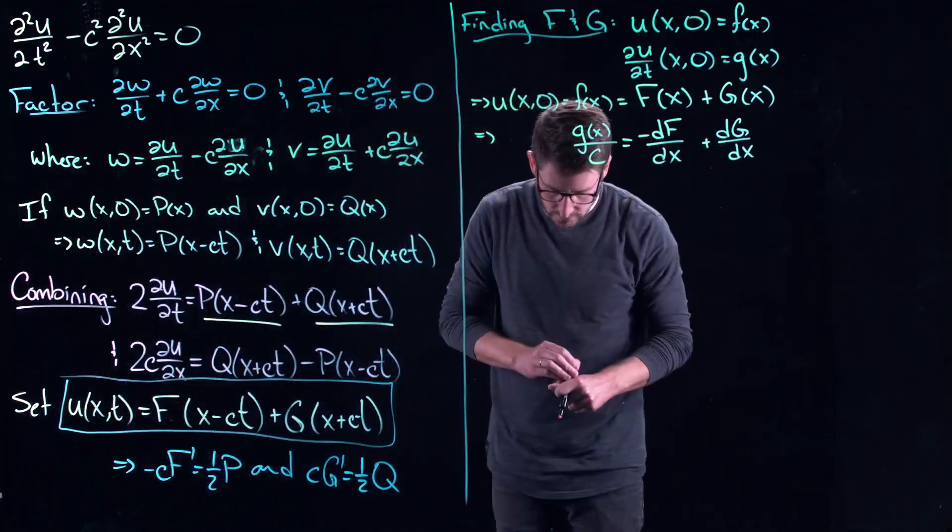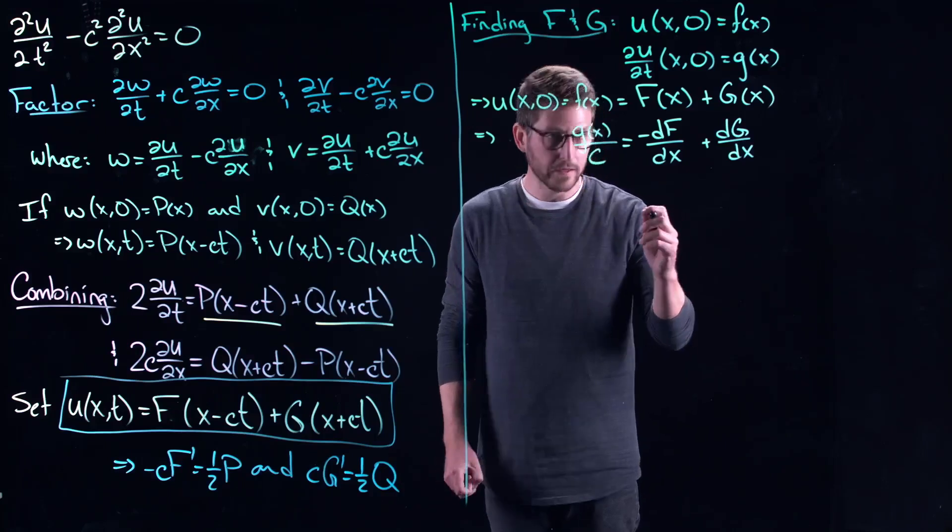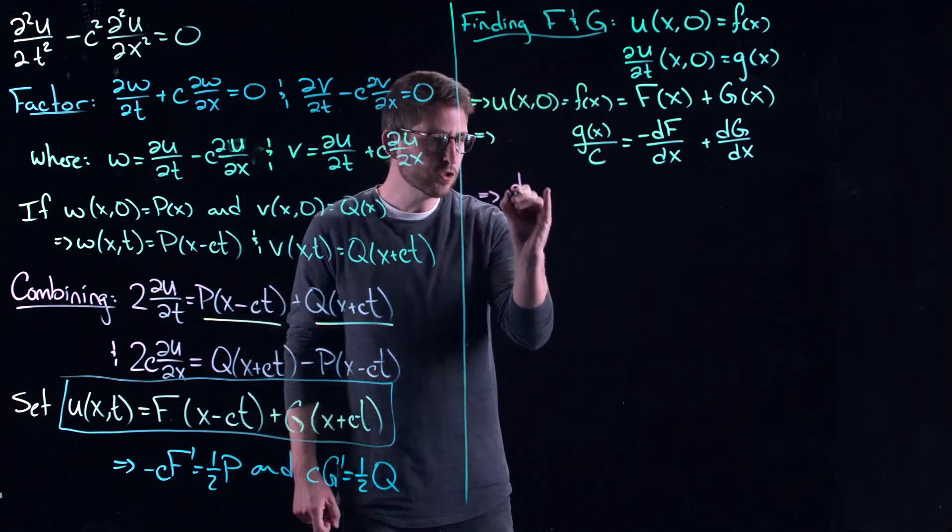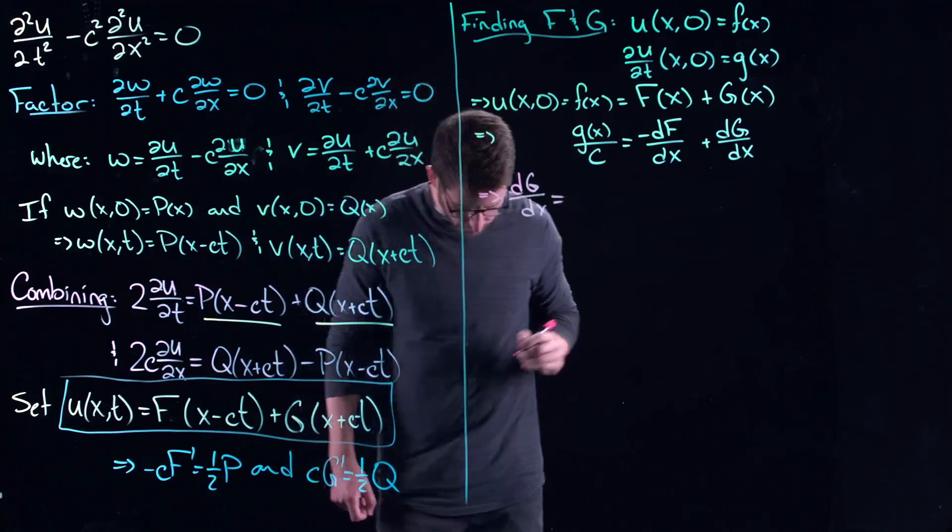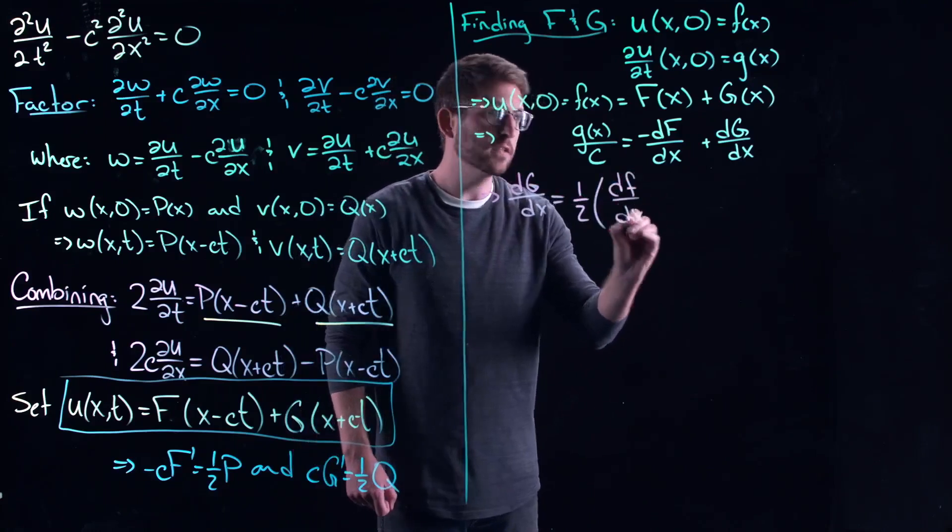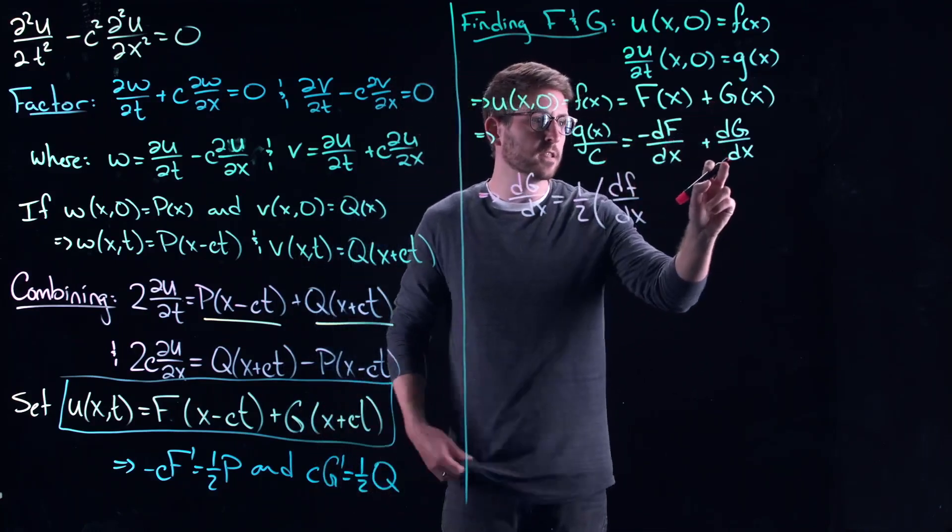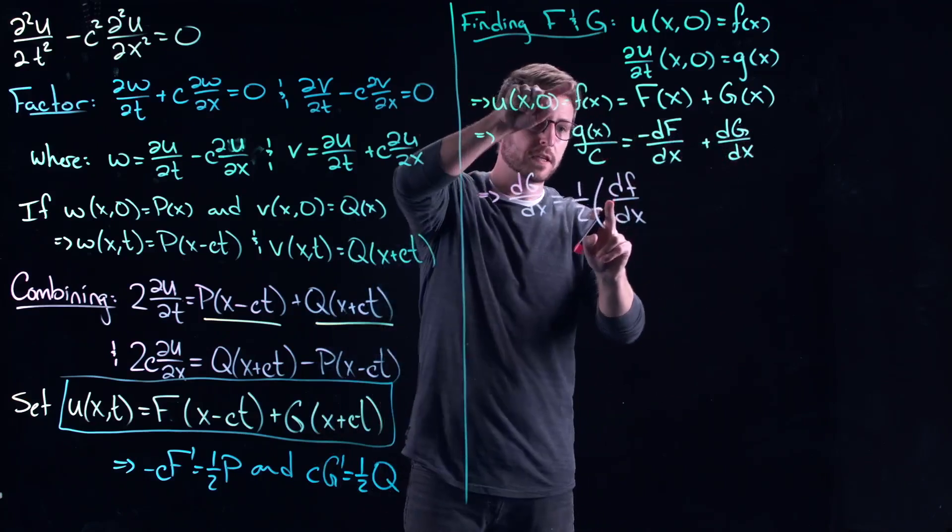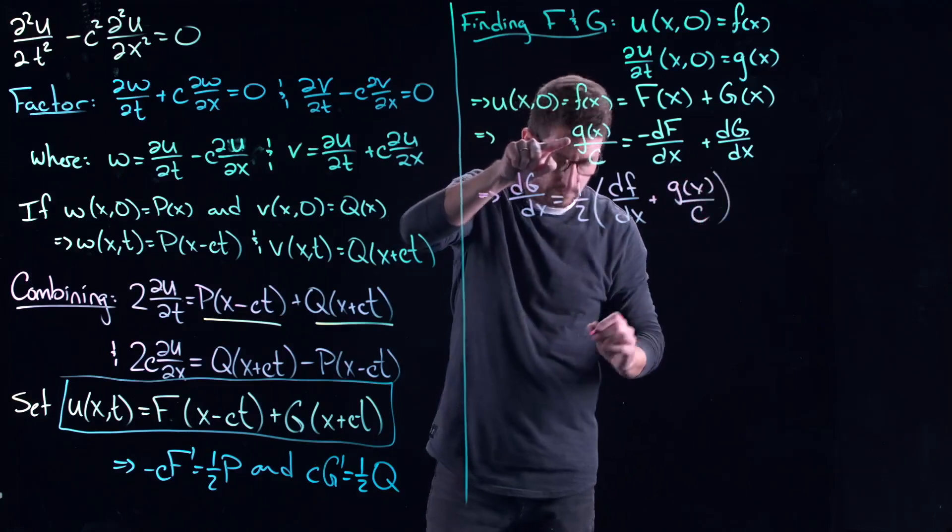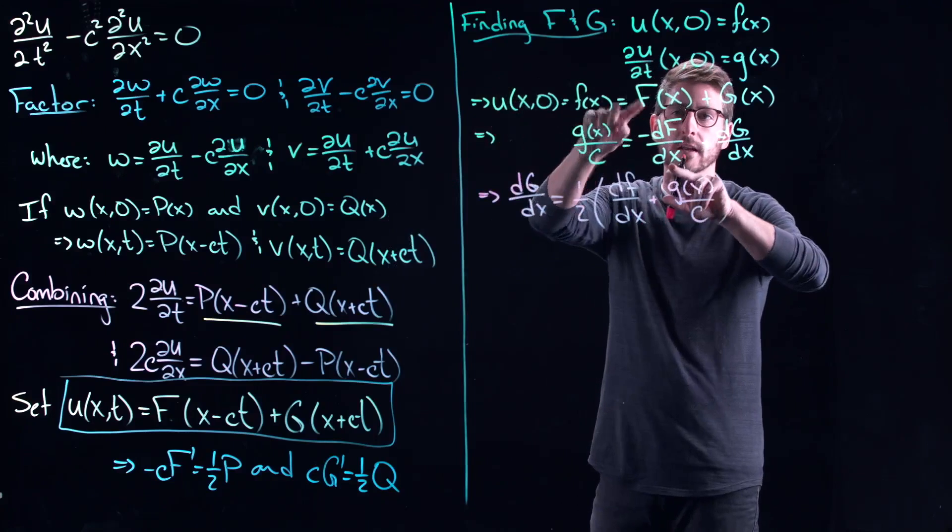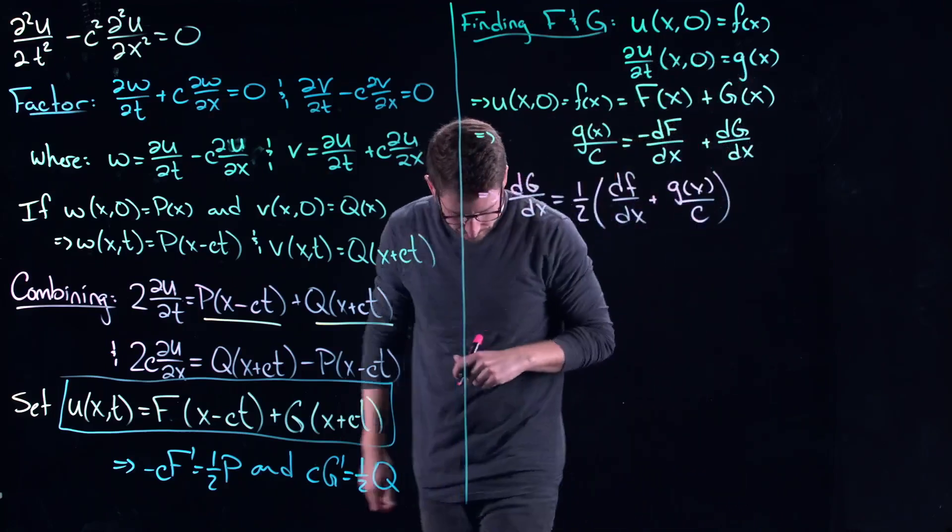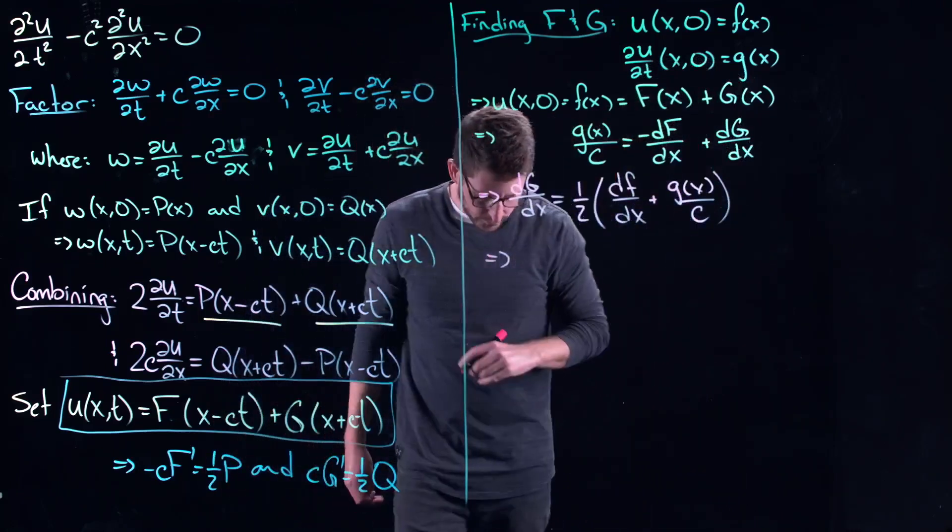So now the question is, what can I do with these two things? Well, what I could do is I could rearrange and I could identify that dG/dx is equal to one-half of dF/dx plus the derivative of the initial condition plus G of X over C. Because when I take the derivative of this thing and add these two equations together, the derivatives of capital F disappear. And I'm left with two of these, that's where the one-half comes from.